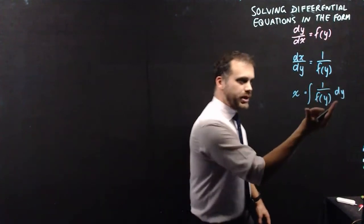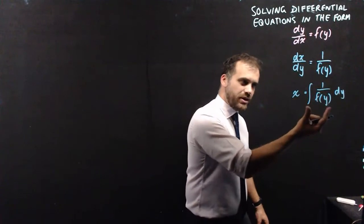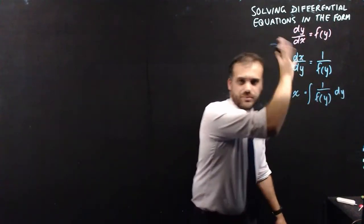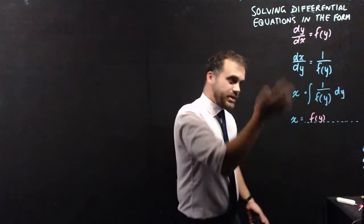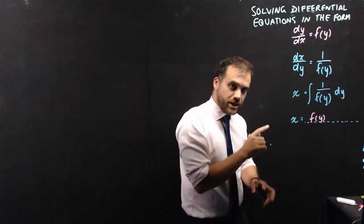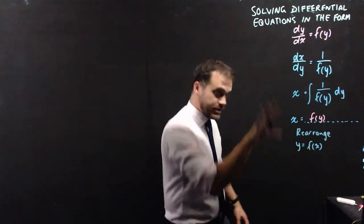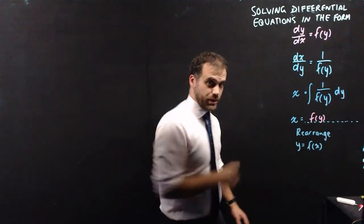Obviously, we're going to be able to find the integral of that, and once we've got the integral of that, we're going to have x equal to something, something, something y. Once we have x equals some function of y, we can then rearrange that to turn it into y equals something, something, something x. And that is the process. That's what we're going to do this video.